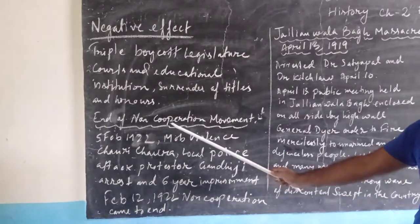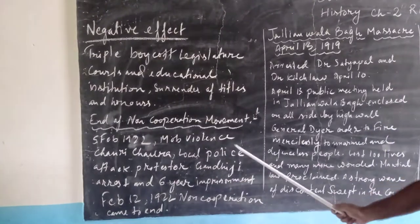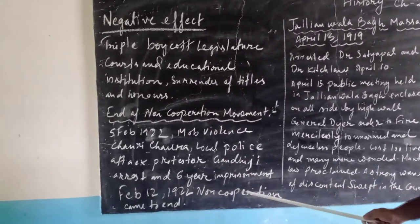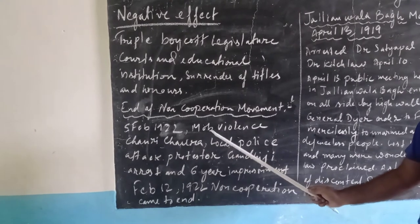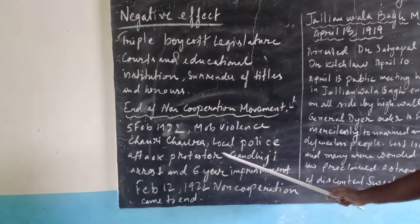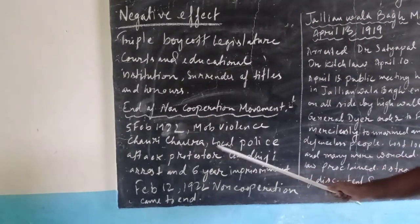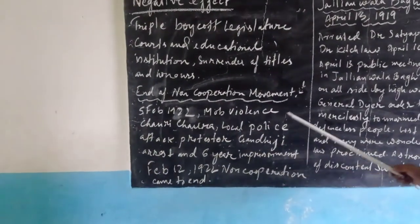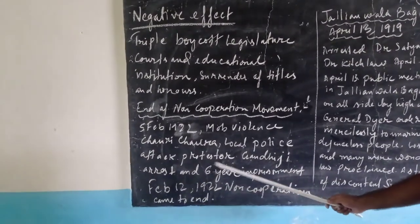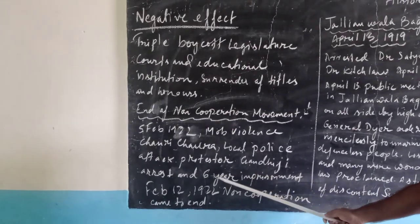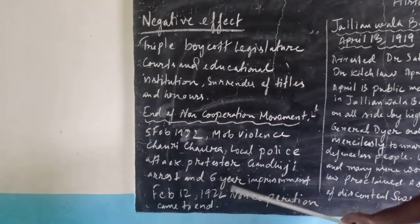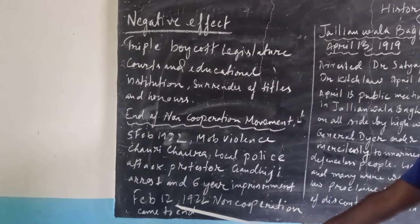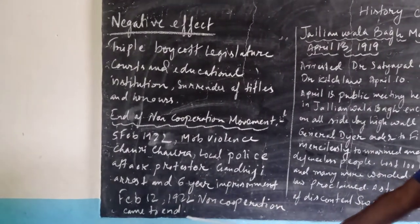Next, we will look at the end of the Non-Cooperation Movement. On 5 February 1922, mob violence occurred in Chauri Chaura, where local police attacked the protesters. Gandhi ji always believed in non-violence and promoted Satyagraha, but some leaders did not accept his principle of non-violence and got involved in violence. In connection to this incident, Gandhi ji was sent to jail for 6 years. By February 12, 1922, the Non-Cooperation Movement came to an end.